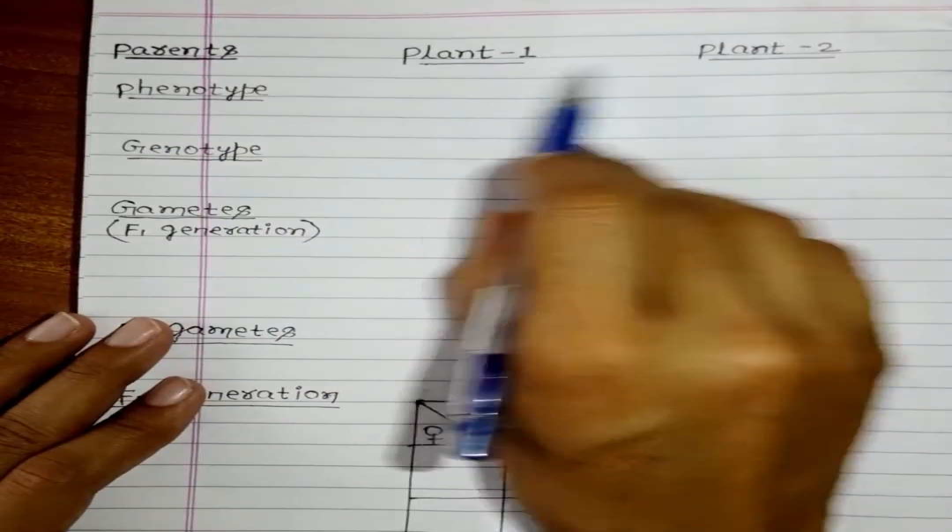So you have seen the question. How to solve and how to draw the monohybrid cross? This is very easy. What we have to do - first we have to write the parents. Here plant 1, plant 2. Means parents are 2, plant 1 and plant 2.